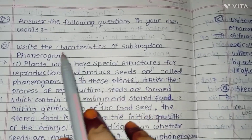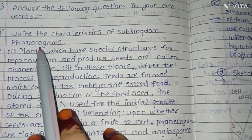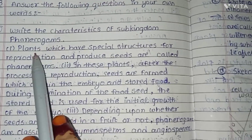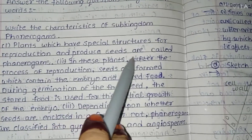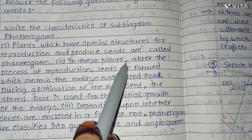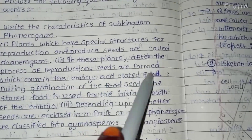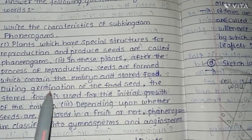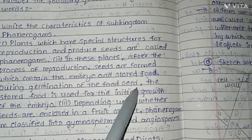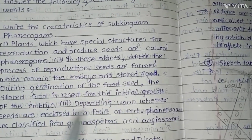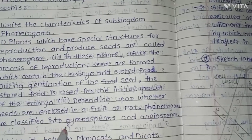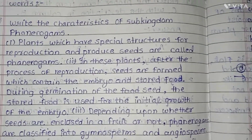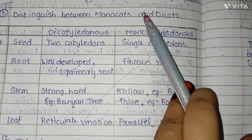Question number three, first question: write the characteristics of sub-kingdom Phanerogams. Plants which have special structure for reproduction and produce seeds are called Phanerogams. In these plants, after the process of reproduction, seeds are formed which contain the embryo and stored food. During germination, the stored food is used for the initial growth of the embryo. Depending upon whether the seeds are enclosed in the fruit or not, Phanerogams are classified into Gymnosperm and Angiosperm.